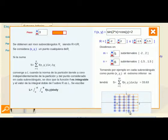Realizada la partición el siguiente paso es elegir un punto cualquiera dentro de cada uno de los subrectángulos. Para cada rectángulo en este caso se está considerando como punto elegido el extremo inferior izquierda. Para este rectángulo este sería el punto elegido, para este otro rectángulo este sería el punto elegido.